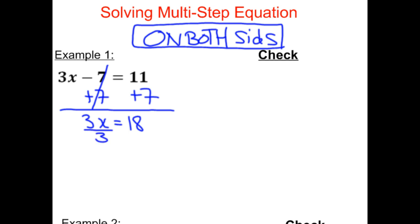So I will divide by 3, and whatever I do to one side, I have to do to the other side. So I'll divide by 3 on the other side. And now the 3s cancel. x equals 18 divided by 3 is 6.